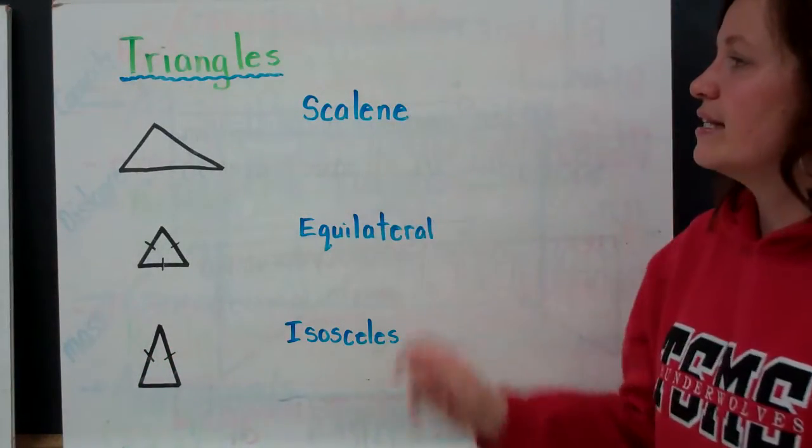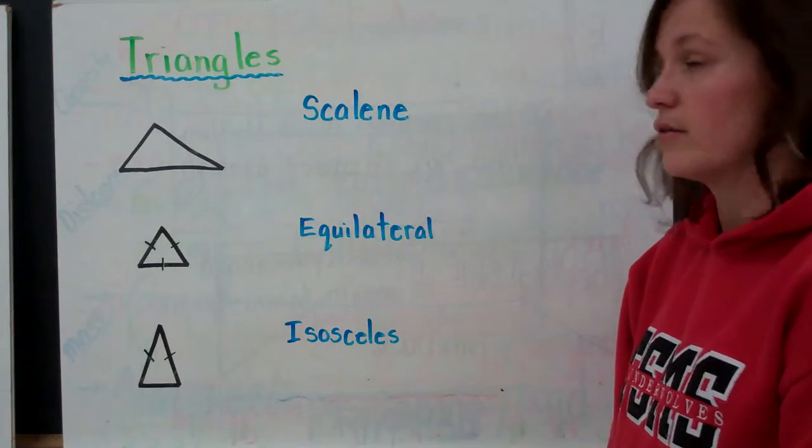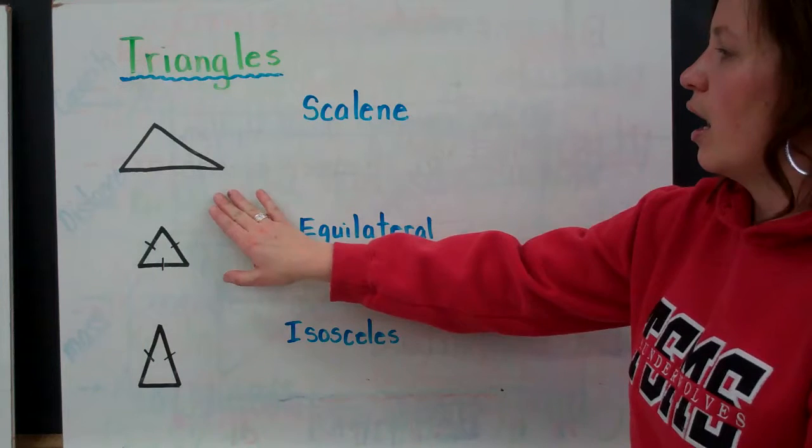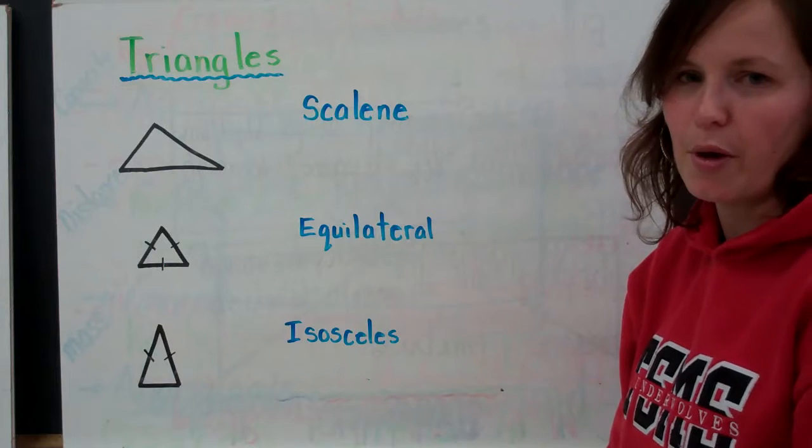Triangles. We have three types of triangles, and they are identified based on their length of sides and their angles. So we have scalene, equilateral, and isosceles. I recommend that you practice how to spell that one. It's a little bit tricky.